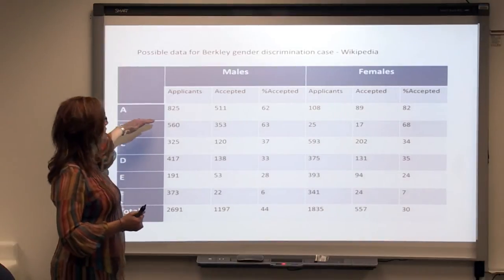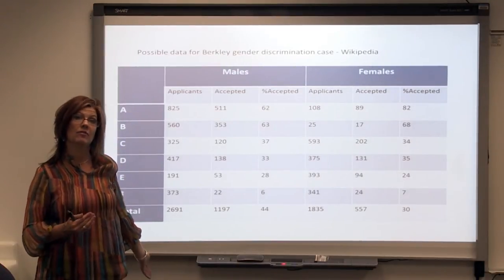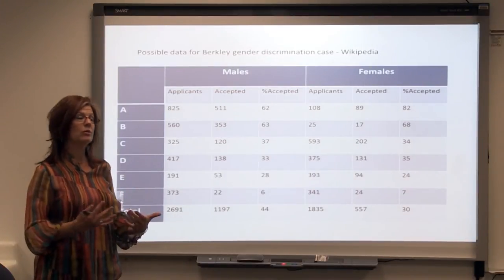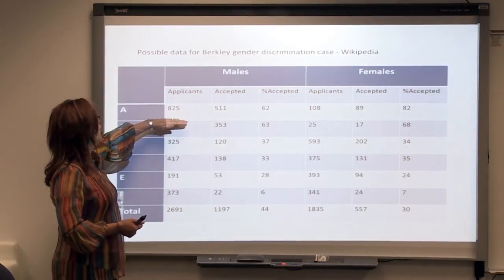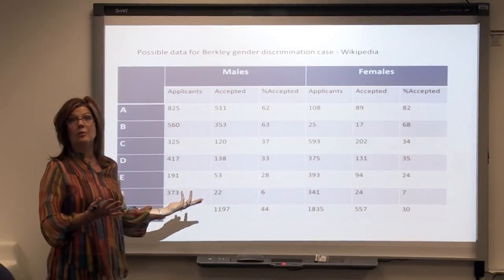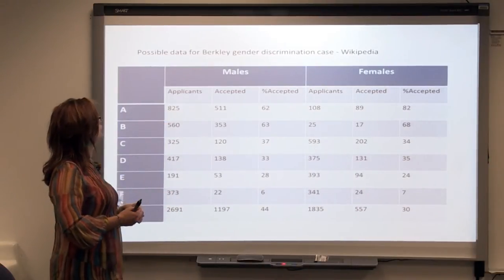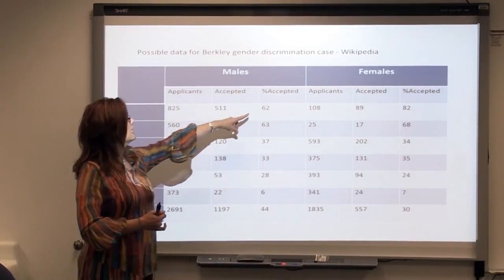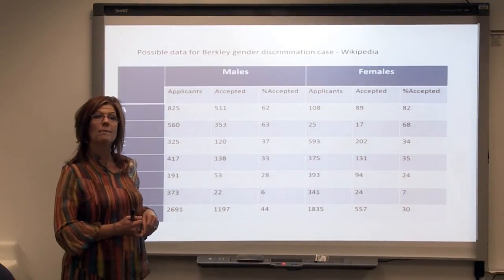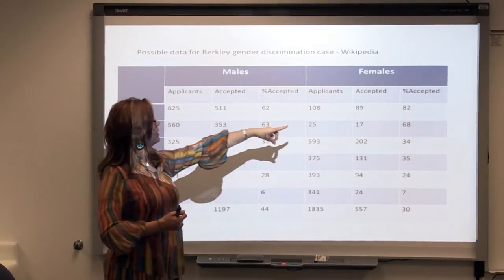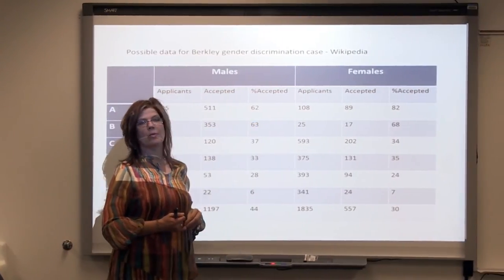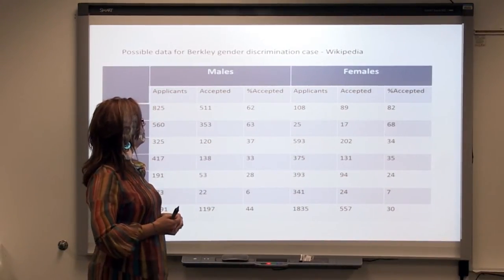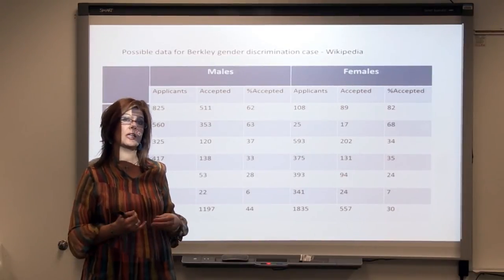But what if we look at the different colleges that accepted male and female students based on their number of applicants within the university? Let's look at College A, where maybe 825 males applied and they accepted 511 out of those 825 — that's 62% of males that College A accepted. But look at the females: if 108 applicants applied to College A and 89 of them were accepted, that's 82% of the females accepted at College A.